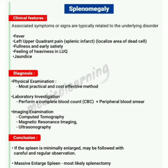In conclusion, if the spleen is minimally enlarged, it may be followed with careful and regular observations. For a massively enlarged spleen, splenectomy is most likely the treatment of choice. So this is all about splenomegaly.